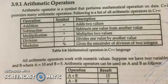Bismillah ar-Rahman ar-Rahim. Assalamu alaikum students. Last lecture we discussed about operators. There are two types of operators: unary operators and binary operators. In unary operators there is only a single operand and in binary operators there are two operands. So now we are going to discuss some operators.